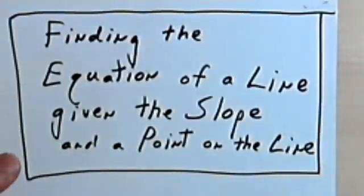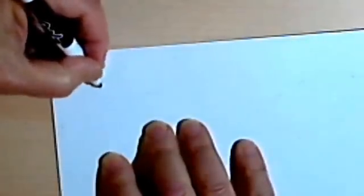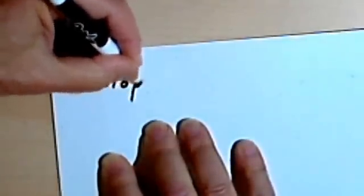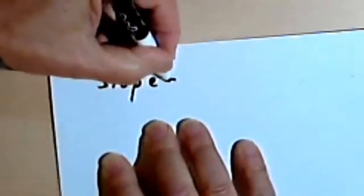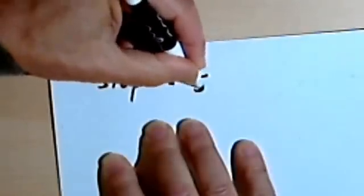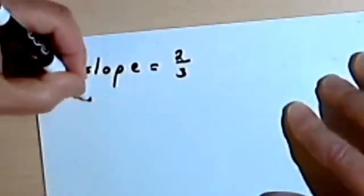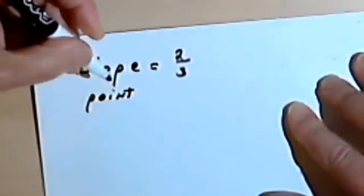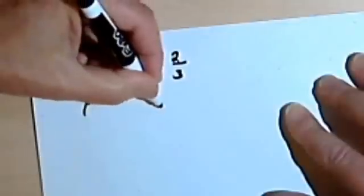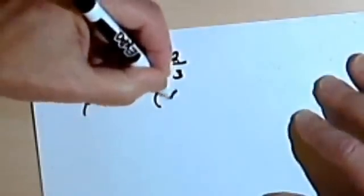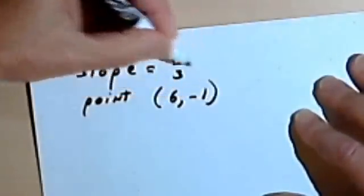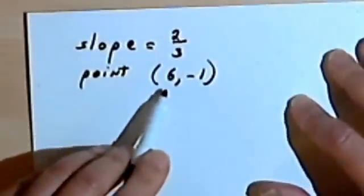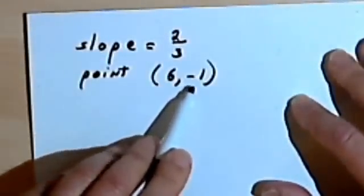So let's take a look at it. Let's say you're given the information that there's a line, and the line has a slope of two-thirds. And there's also a point somewhere on the line and that point is at 6, negative 1. In other words, the ordered pair for the point is 6, negative 1.